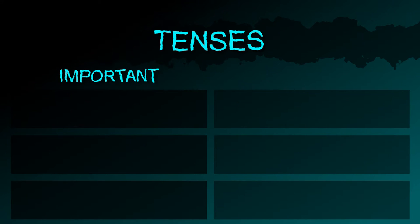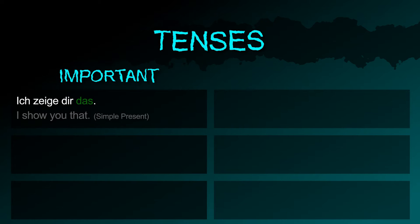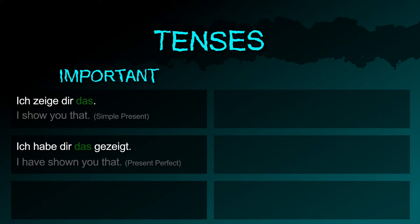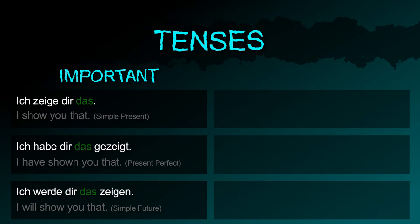Important tenses. Simple present: Ich zeige dir das. Present perfect: Ich habe dir das gezeigt. Simple future: Ich werde dir das zeigen.